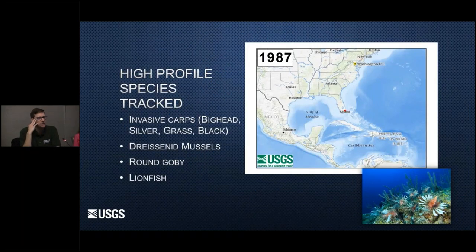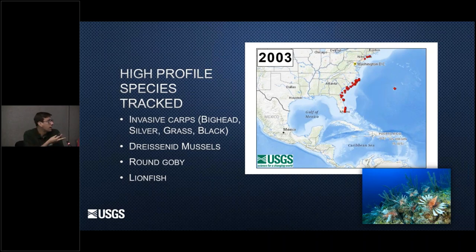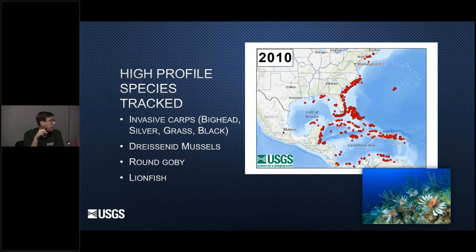We track a lot of species. Some of the more high-profile species include invasive carps — bighead, silver, grass, and black carps — dreissenid mussels in the Great Lakes and Mississippi Basins, round goby introduced in the Great Lakes, and lionfish. This animated GIF shows the spread of lionfish around the Atlantic and Caribbean over the last 20 years, since 1985.